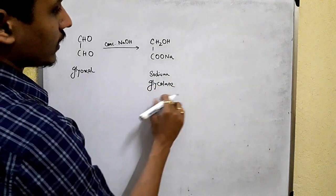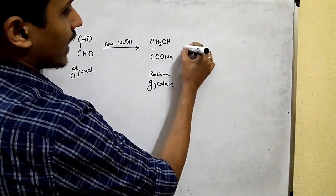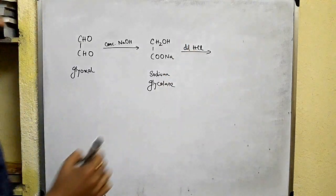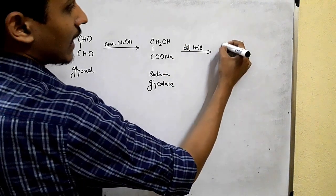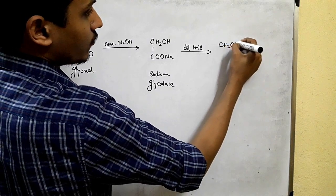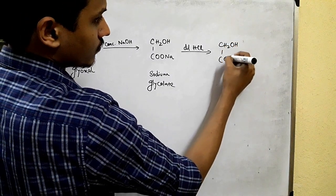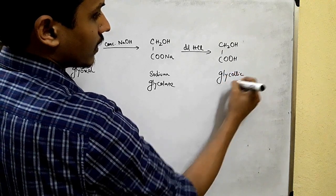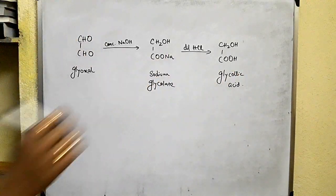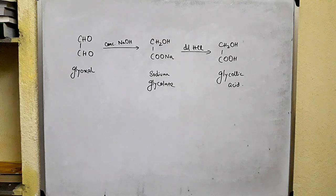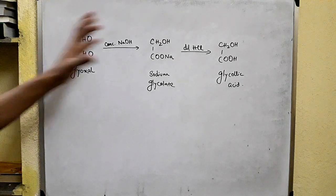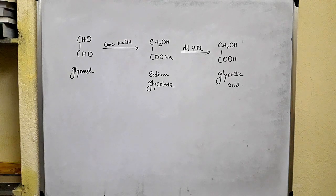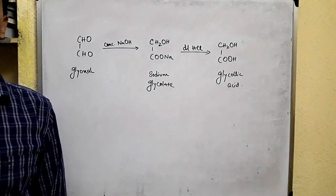If we then treat sodium glycolate with dilute acid — let's say dilute HCl — then glycolic acid is formed. This is called the intramolecular Cannizzaro reaction. That's all for today; I will see you in the next video.